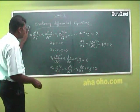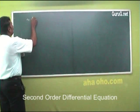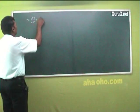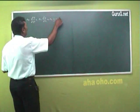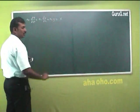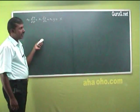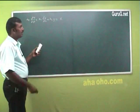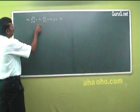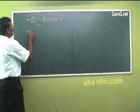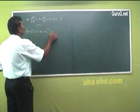The second order differential equation: a₀ d²y/dx² plus a₁ dy/dx plus a₂y equals X, where X is a function of x — such as eˣ, sin x, cos x, tan x, or any function of x. This equation can also be written as (a₀D² plus a₁D plus a₂) times y equals X.